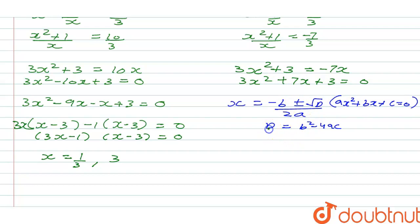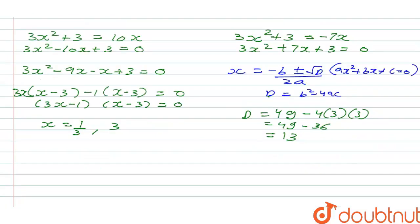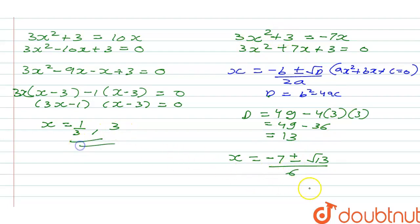Comparing with ax squared plus bx plus c equals 0, we have a equals 3, b equals 7, c equals 3. So d equals 7 squared minus 4 times 3 times 3, which is 49 minus 36 equals 13. Therefore the answer is x equals minus 7 plus or minus square root of 13, all over 2 times 3, which is 6.